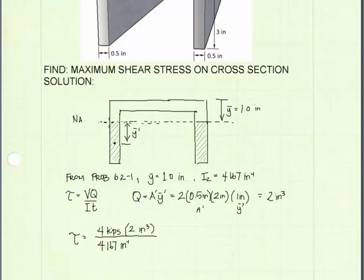And T is the width of the member at the point where we're evaluating the shear stress. And that's going to be the width of this leg on this side and the width of the leg on the right side. And that's going to be a total of one inch.